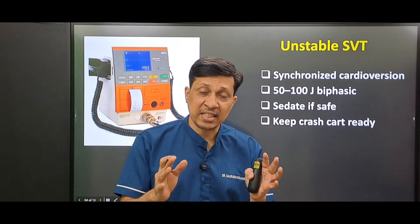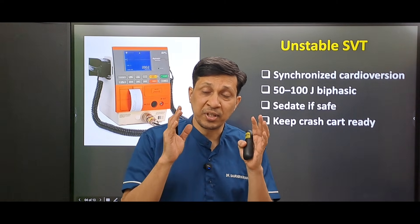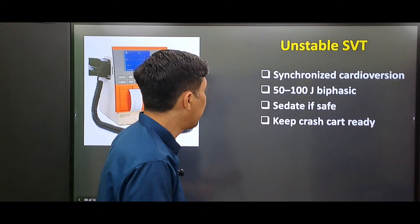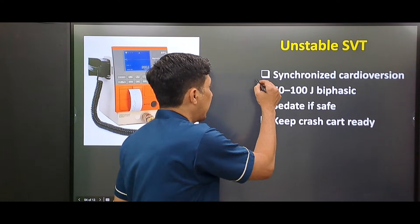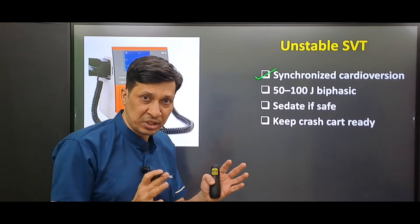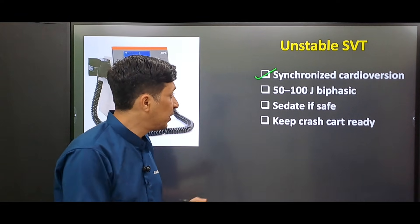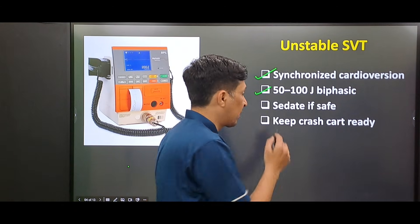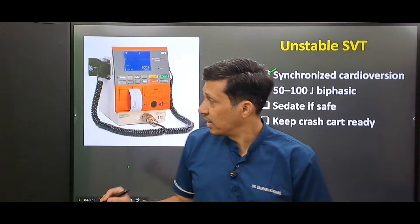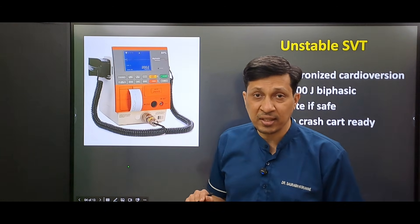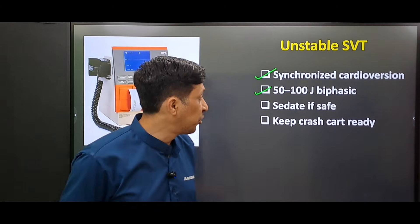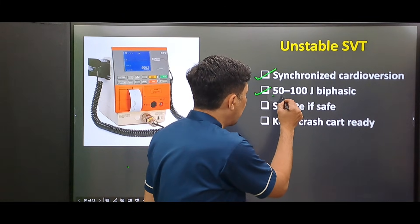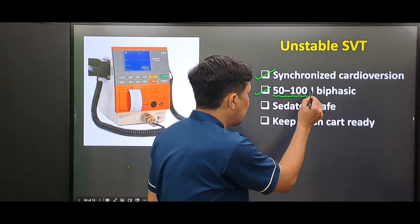If the patient is unstable, then without wasting much time we will go for synchronized cardioversion. We will use a biphasic machine — you can see a picture of a biphasic machine here — and you will give a shock of 50 to 100 joules.